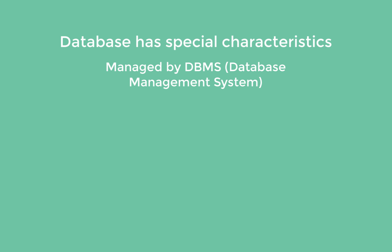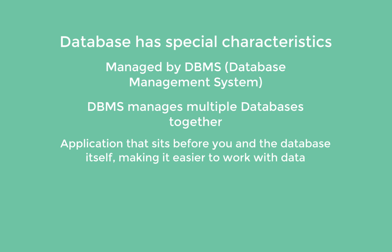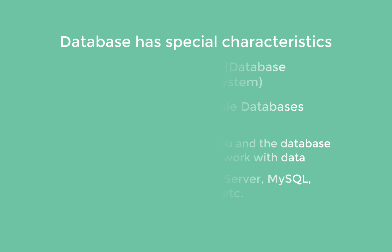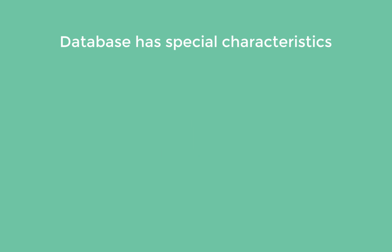A database has some special characteristics. Databases are basically maintained by something called DBMS, which manages multiple databases together. DBMS is nothing but an application, or you can say it's an engine, that manages multiple databases and their lifecycle. For example, we have SQL Server, MySQL, and PostgreSQL — these are applications that manage multiple databases together.